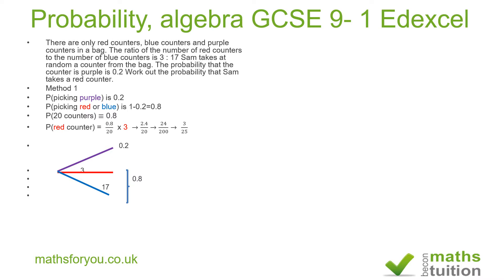That gives us 2.4 divided by 20. Multiplying numerator and denominator by 10 gives 24 over 200. Cancelling down, we divide 24 by 8 and 200 by 8 to get 3 over 25. That's the arithmetic method. Now method two is the algebraic method.